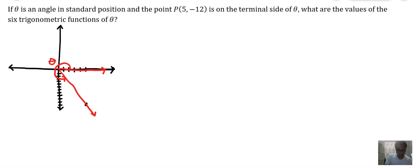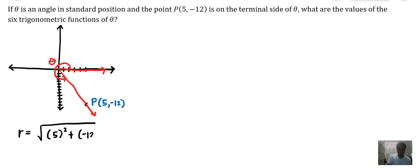The terminal side contains the point P with coordinates 5 and negative 12. We can compute for the value of R. R equals the square root of 5 squared plus negative 12 squared. 5 squared is 25, 12 squared is 144, giving us 169. The square root of 169 is 13, so the value of R is 13.